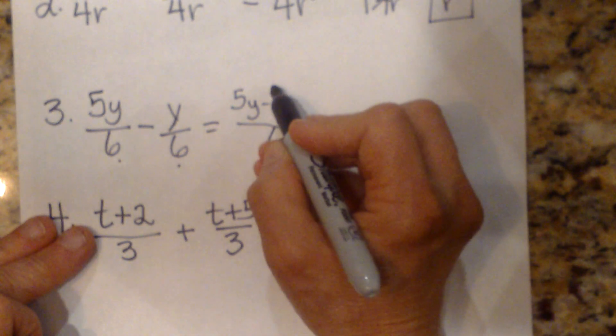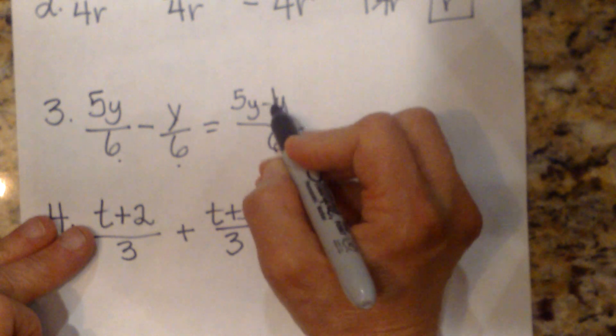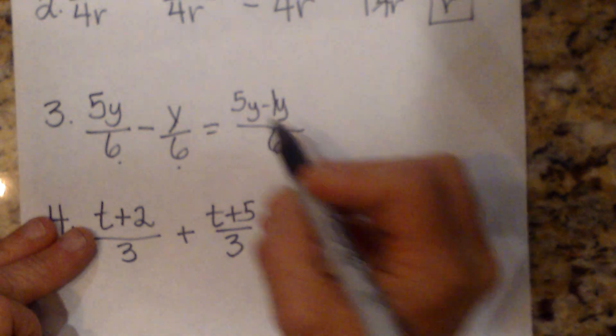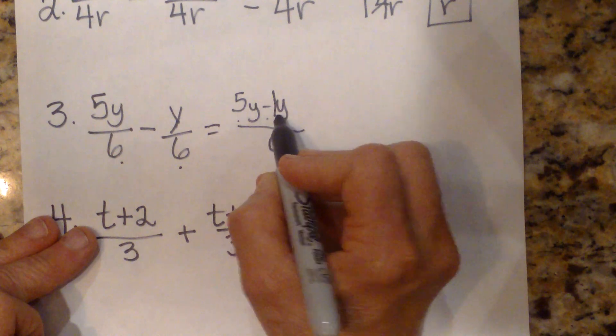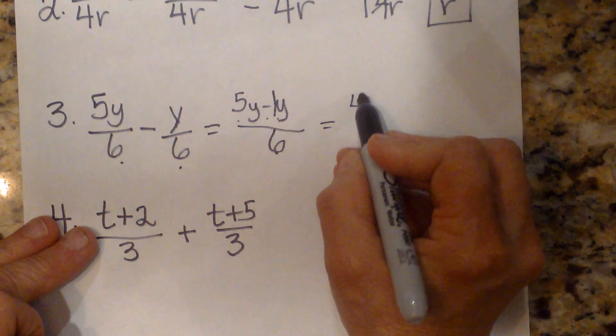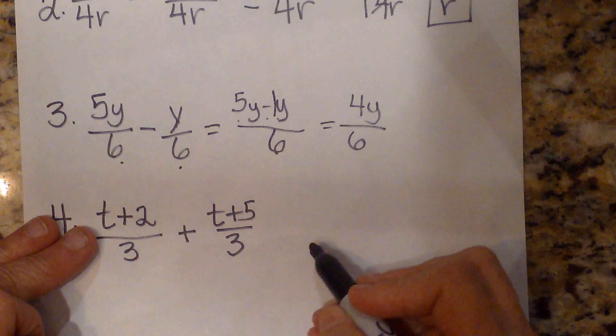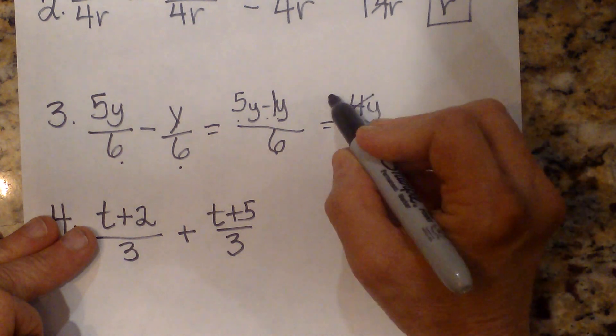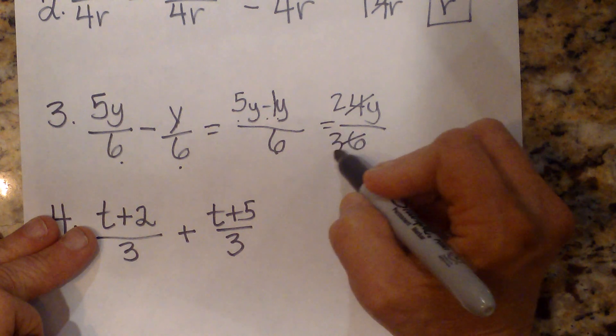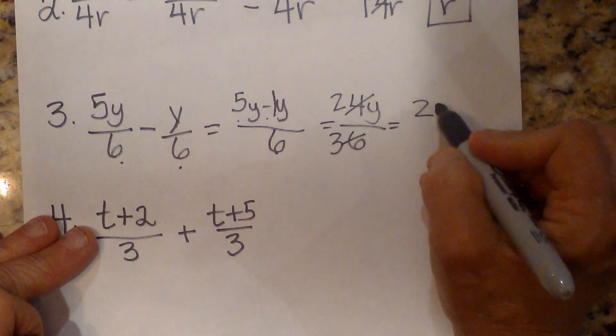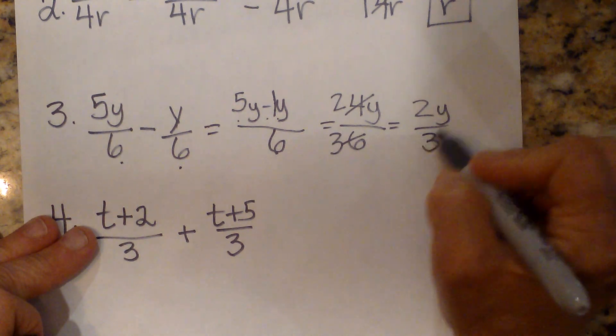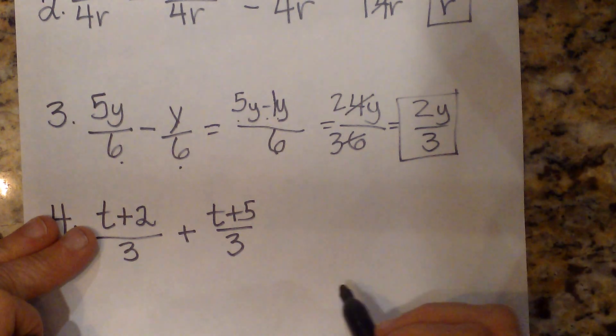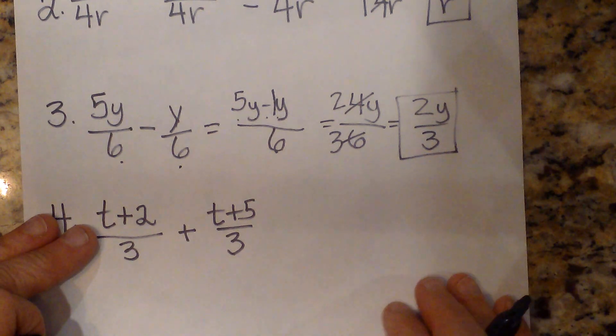Remember, a y really has a lead coefficient of 1. So if you need to, draw that in there. So 5y minus 1y is 4y over 6. And again, we can reduce this, this time by 2. So let's take a 2 out of each. And then that leaves us with 2y over 3. So it's 2 thirds y or 2y over 3.